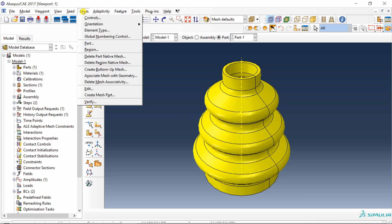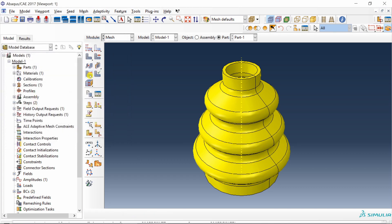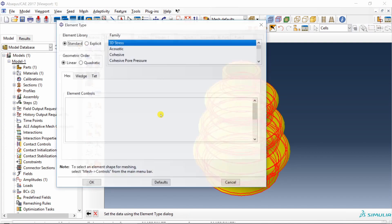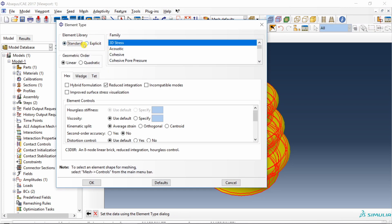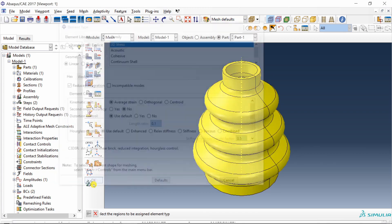Just to check, you can go in mesh controls and you will see over here, sweep will be selected. Say okay. Next, let's assign the element type to our part. Over here, you have to change this to explicit 3D stress. No need to change anything else. Say okay.